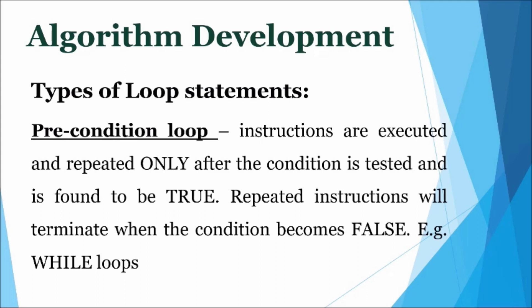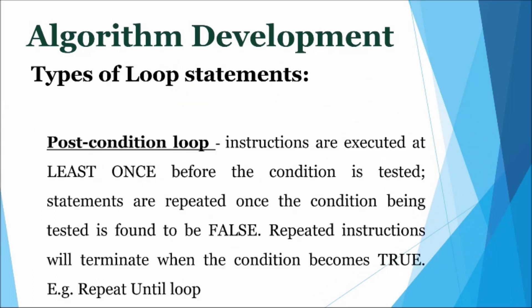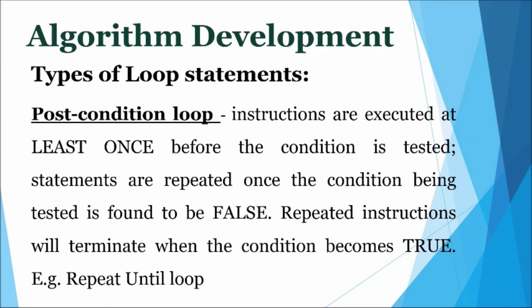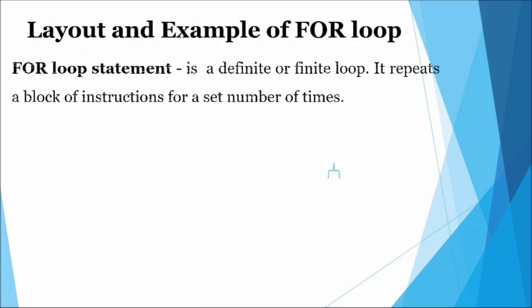An example of this loop is the while loop. Post-condition loop: with this loop, instructions are executed at least once before the condition is tested. Statements are then repeated when the condition being tested is found to be false. Repeated instructions will then terminate when the condition becomes true. An example of this loop is the repeat-until loop.